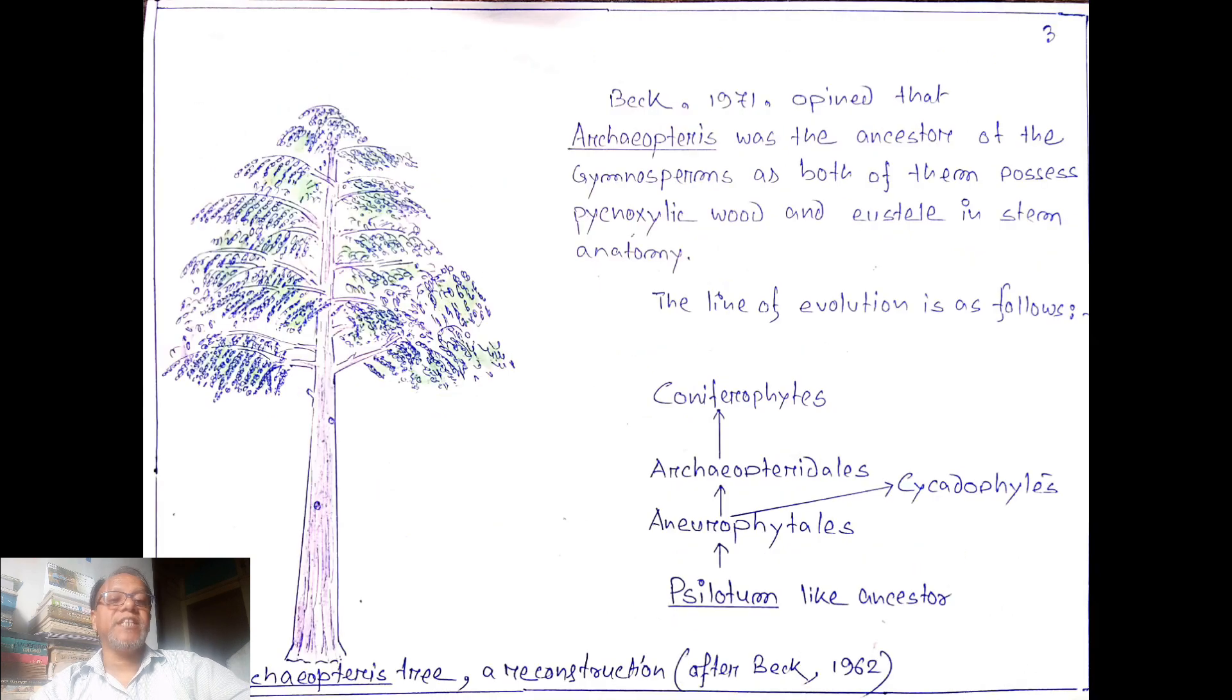A nice diagram is given. It is none other than Archaeopteris tree, a reconstructed tree drawn after Beck 1962. Beck 1971 opined that Archaeopteris was the ancestor of the gymnosperms as both of them possess pycnoxylic wood and eustele in stem anatomy.